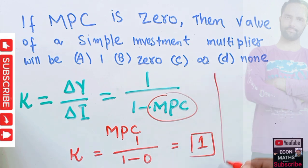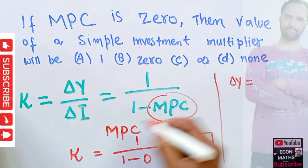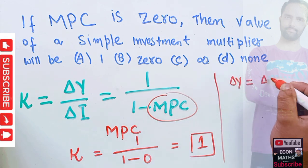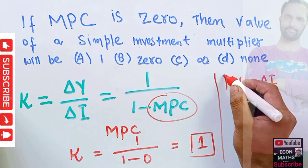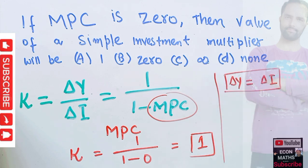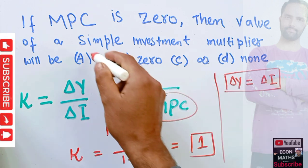Which means change in income will be equal to change in investment. I hope I make myself clear. Thank you, the correct option will be A.